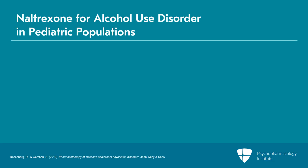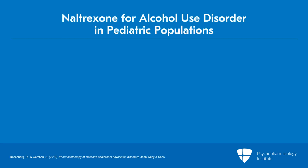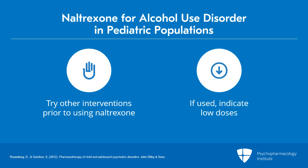Potential indications for alcohol abuse disorder: the use of naltrexone for alcohol dependence is well established among adult patients. Data on safety and effectiveness with adolescents are quite limited. There are results of a small open-label trial suggesting that naltrexone is well tolerated in adolescents seeking treatment and appears to support efficacy. Additional research is needed before naltrexone can be recommended routinely in pediatric populations. The recommendation at present is to try other more standard interventions prior to naltrexone, and when it is used, to use a smaller, lower dose.